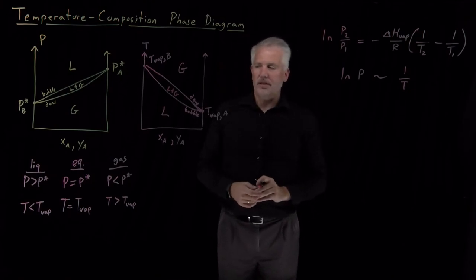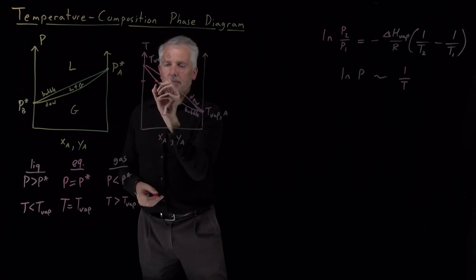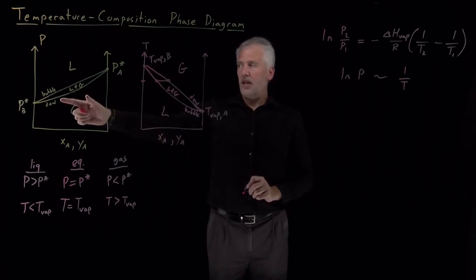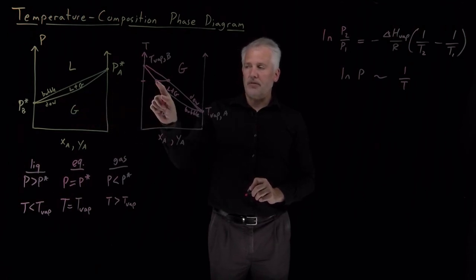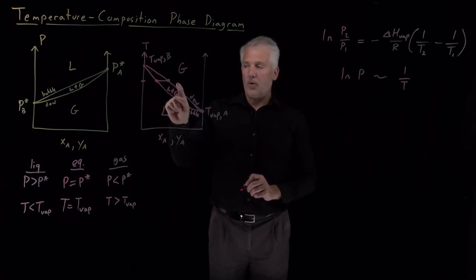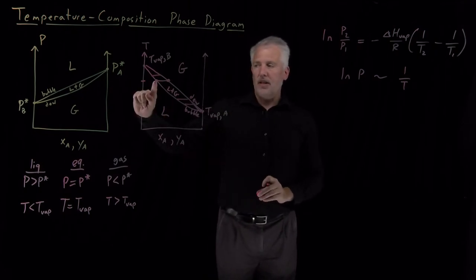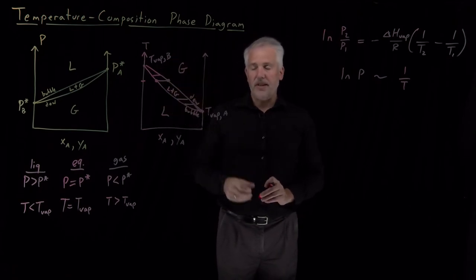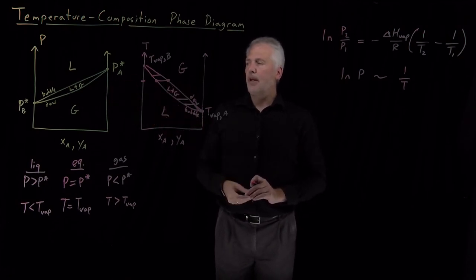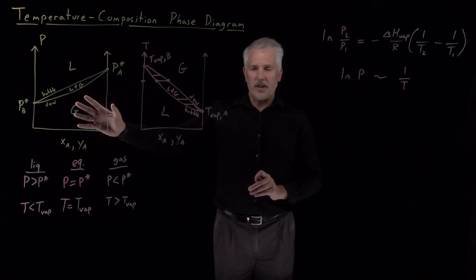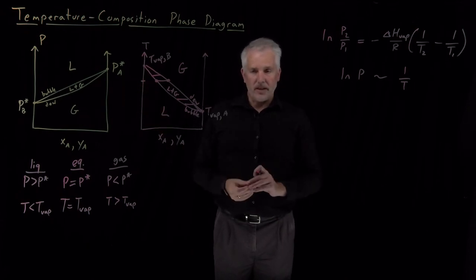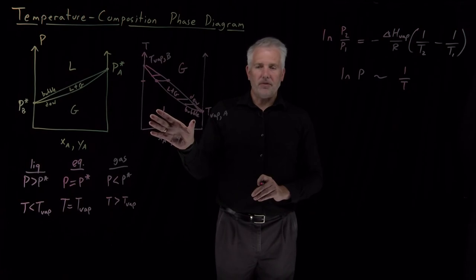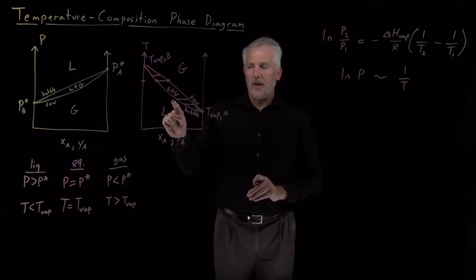In the phase coexistence region, liquid coexists with gas. If I have a system at a given temperature, it will be in equilibrium with a liquid at one composition and a gas at another composition. Just as on the pressure-composition diagram, the temperature-composition diagram has a liquid-gas coexistence region, and horizontal tie lines tell us the composition of the liquid and the composition of the gas. Everything is essentially the same as the pressure-composition diagram, with the key exception that the diagram has been turned upside down due to the nonlinear inverse relationship between boiling points and vapor pressures.